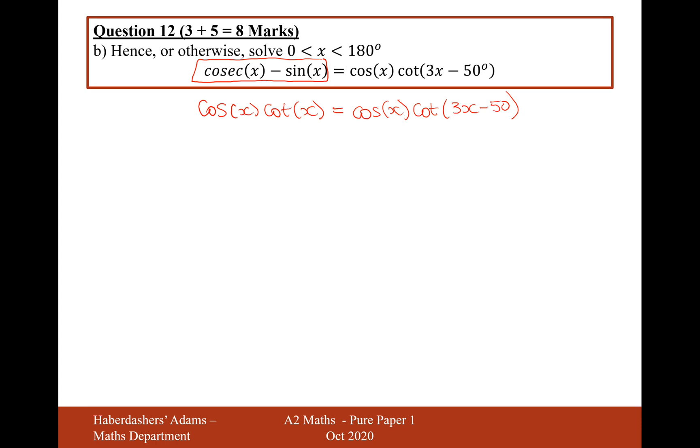So let's now move all of this to one side. Let's maybe move it all on to the left hand side. So cos x cot x minus cos x cot 3x minus 50 equals 0. So let's now factorise out cos x. So it's going to be cos x brackets cot x minus cot of 3x minus 50 equals 0. Therefore we either have this expression equals 0 or this expression equals 0.